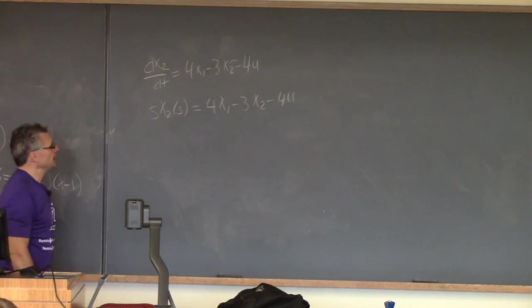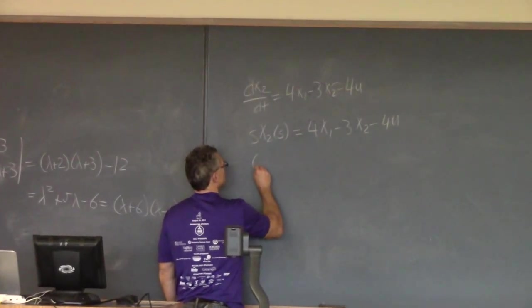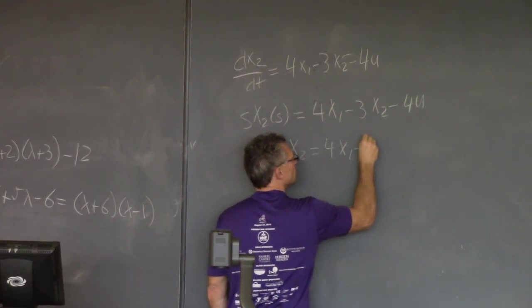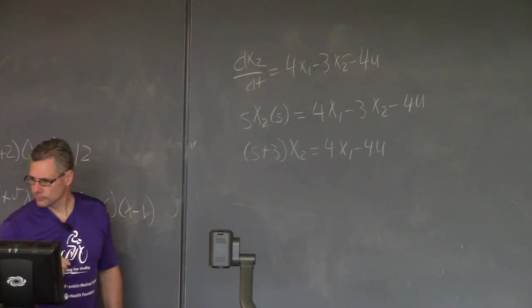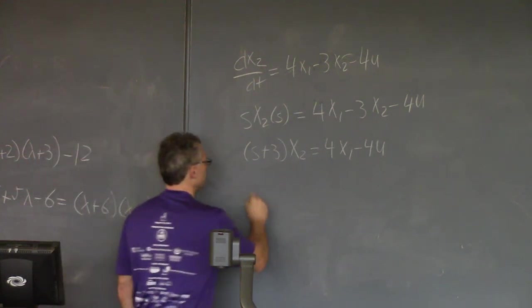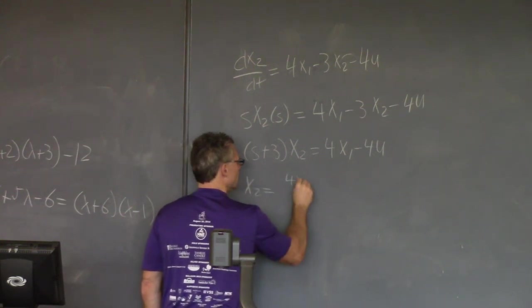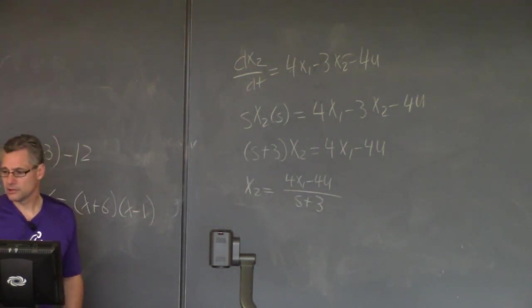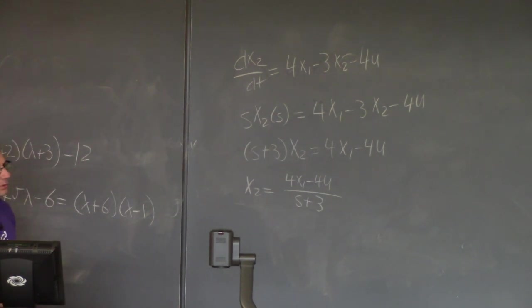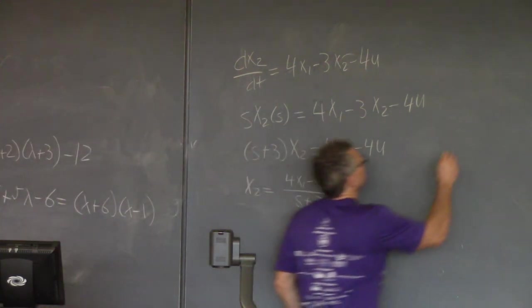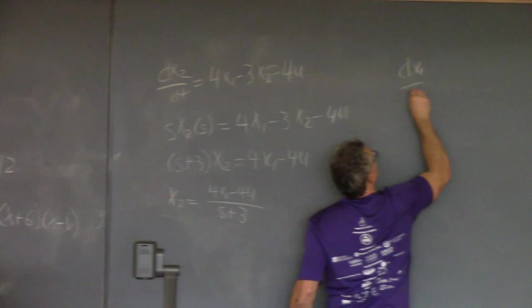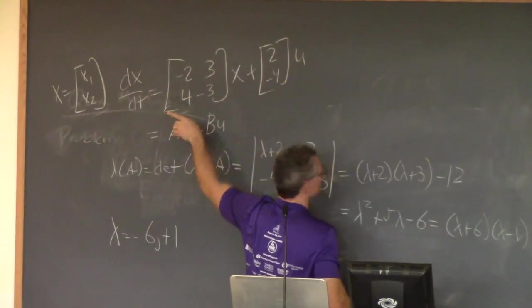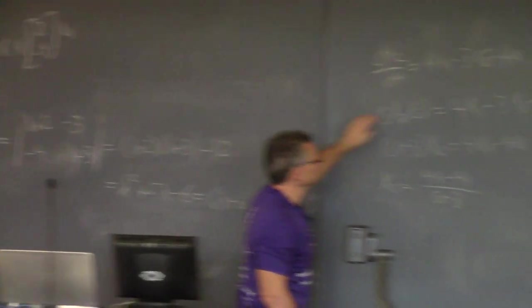So this will be 4x1 minus 3x2 minus 4 times u. What I aspire to do is use this equation to eliminate x2 by solving for x2. So I get s plus 3 here. This expression allows you to eliminate x2 in terms of x1 and u.